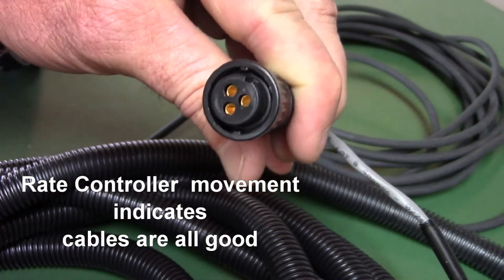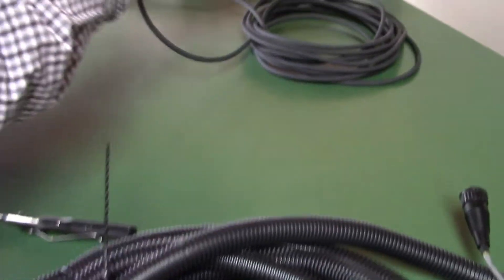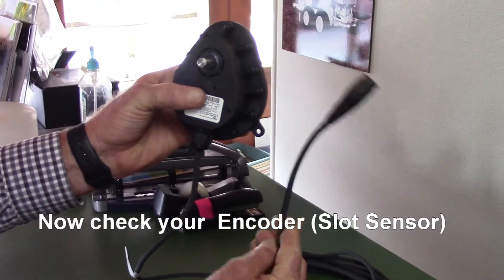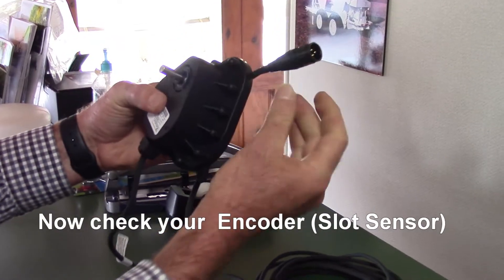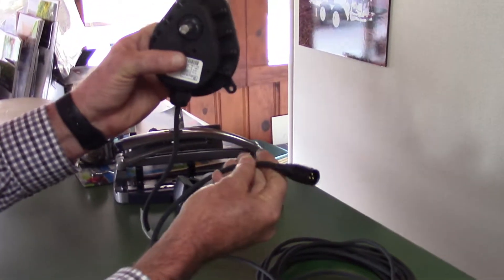If you know all of that's good then the only thing left is this part here. If all your cabling is good before this going up to the rate controller, then that leads you to believe that this is bad.